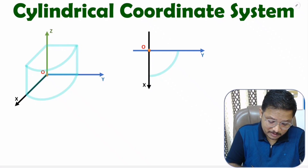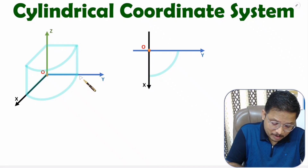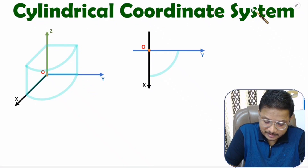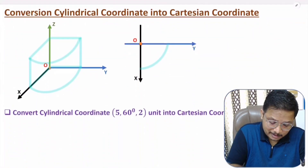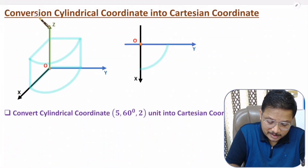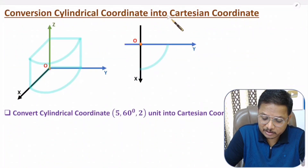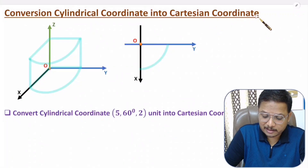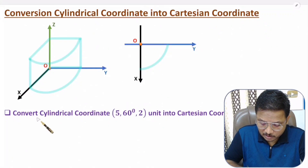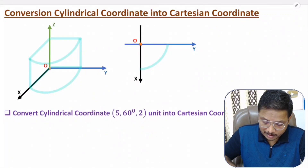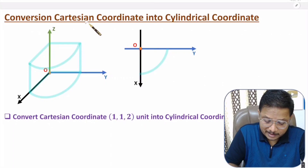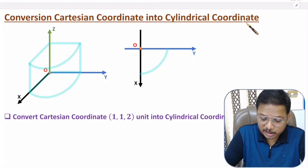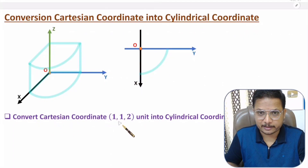In this video, first of all, I will discuss about basics of cylindrical coordinate system. After that, I will explain conversion of cylindrical coordinate into Cartesian coordinate and we will solve one problem based on it. After that, I will explain conversion of Cartesian coordinate into cylindrical coordinate and based on that, we will solve one problem on it.